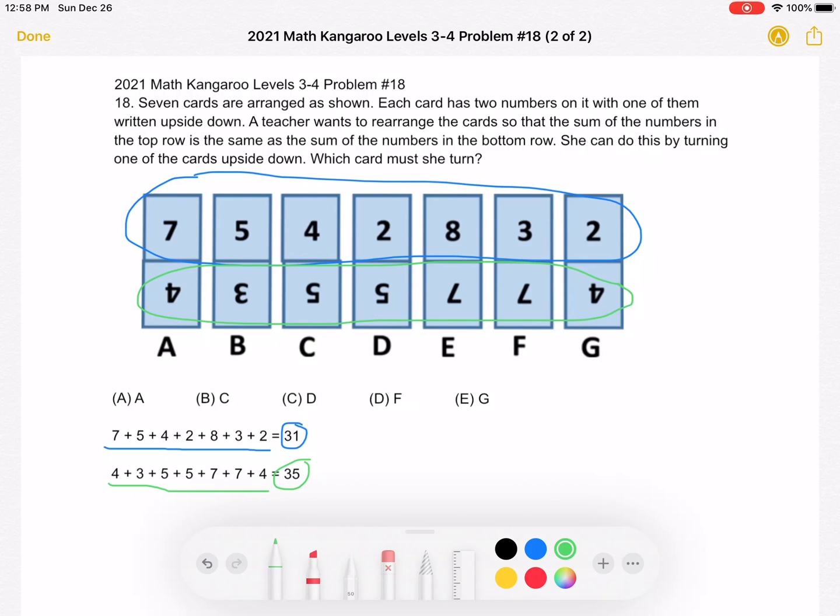Well, the problem tells us that the teacher wants to rearrange the cards so that the sum of the numbers in the top row is the same as the numbers in the bottom row. So right now we have a top row with the sum of 31 and the bottom row with the sum of 35, so we can see that those two sums are not equal.